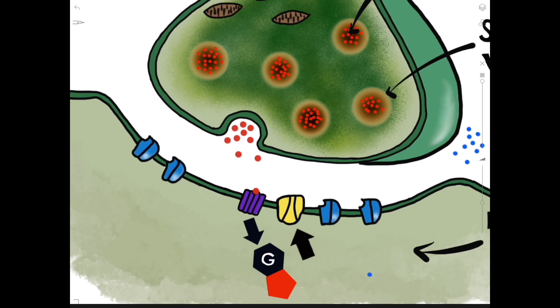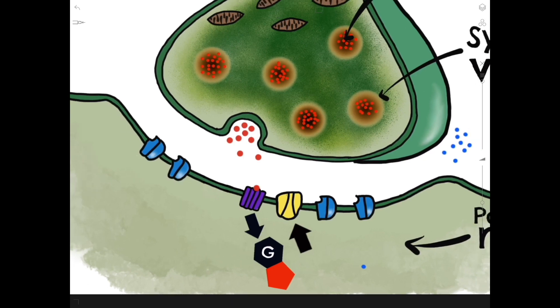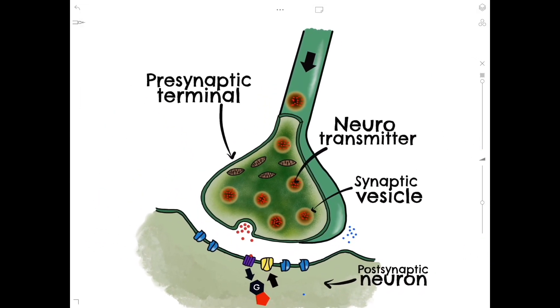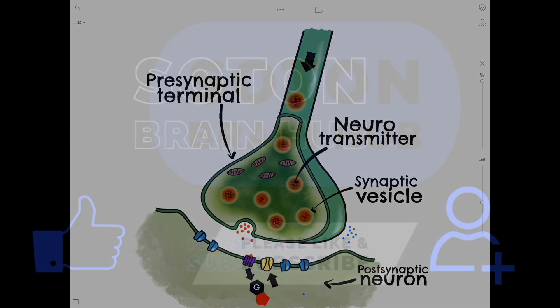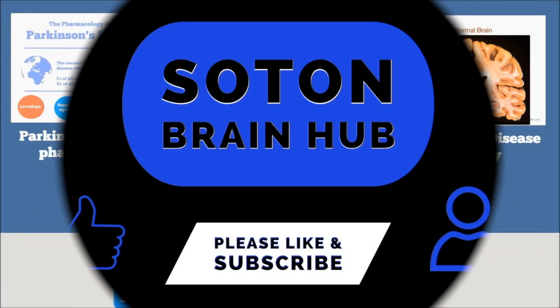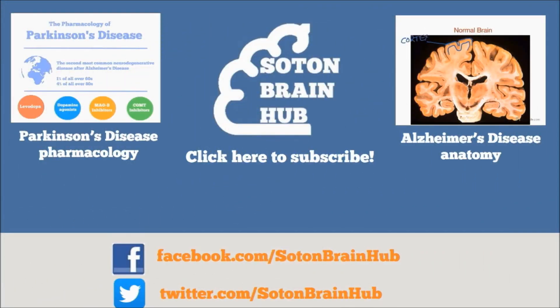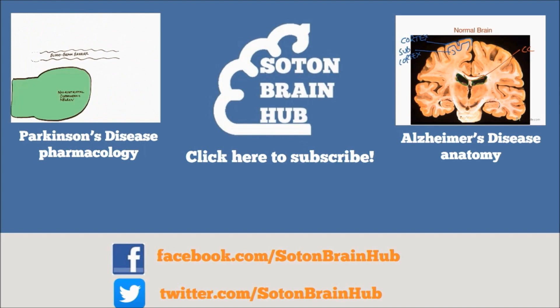Well, this concludes our video. I hope that this has been a clear explanation of chemical signaling and postsynaptic receptors, and that it has helped you understand the mechanisms through which neurons communicate with each other. See you soon!